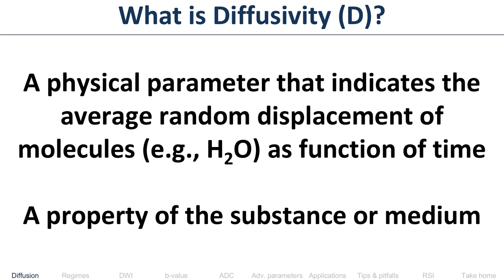Diffusivity indicates the average distance — the average random displacement — of those molecules as a function of time. If the molecules are moving all over the place, and you could literally measure a million molecules and see how far each one moved and took the average, that would be the diffusivity. This diffusivity is a property of the substance or medium — it's a property of the tissue itself.